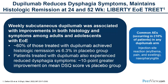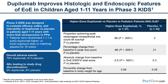Dupilumab reduces dysphagia symptoms and maintains histologic remission in EOE at both 24 and 52 weeks, as determined in the Liberty EOE TREET trial. Weekly subcutaneous dupilumab was associated with improvements in both histology and symptoms among adults and adolescents with EOE. About 60% of those treated with dupilumab achieved histologic remission versus only 6.3% in the placebo group. Patients with dupilumab also experienced reduced dysphagia symptoms — about 10 points greater improvement on mean dysphagia symptom questionnaire scores versus the placebo group. Common adverse events occurring in more than 10% of patients were injection site reactions (redness, pain, and swelling) or nasopharyngitis. Dupilumab has also been shown to improve histologic and endoscopic features of EOE in children aged 1 to 11 years in a Phase 3 kids study.